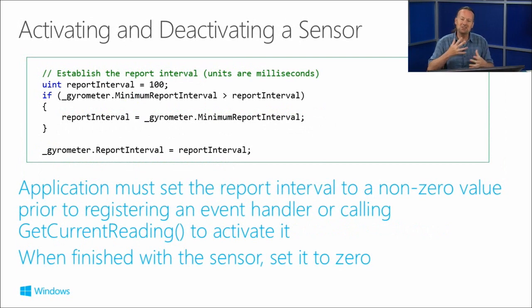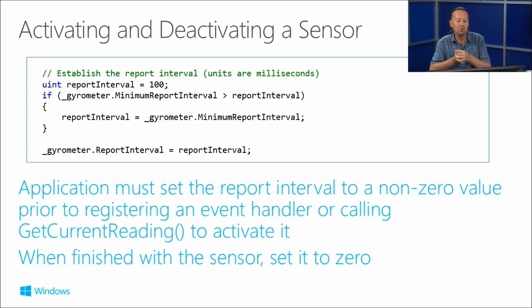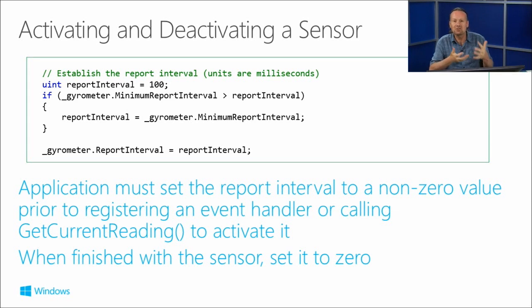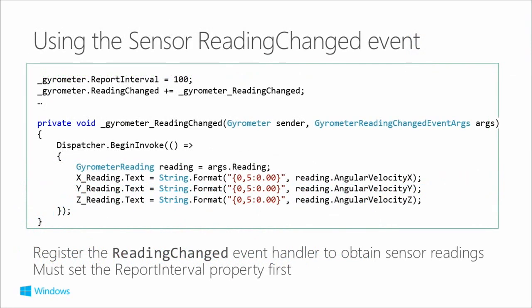When sensors get turned on and off, it happens kind of automatically when you start using them. When you hook up a reading changed event or actually do a direct reading of the device, that will power it up and activate it and you will get the information you want out of it. You need to set the report interval to a non-zero value prior to registering an event handler or calling get current reading - that is the trigger that will actually activate the particular hardware. If you want to use a reading changed event, you set your report interval and hook up your reading changed event handler, and then you will get events being fired at the report interval.